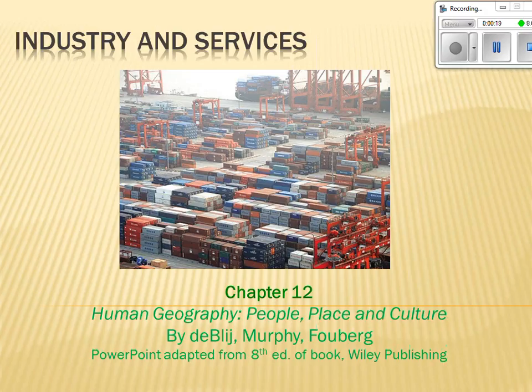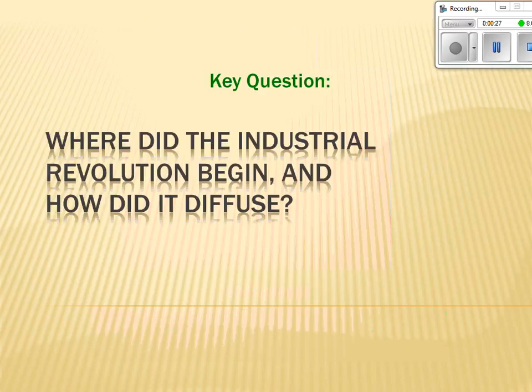You can think about this chapter as being three big chunks of information. The first one is about the industrial revolution and location theories. The second chunk is about the primary industrial regions of the world. And the third part is more about modern industrialization and things like post-Fordist system, offshoring or outsourcing, and where industry is today and in the future.